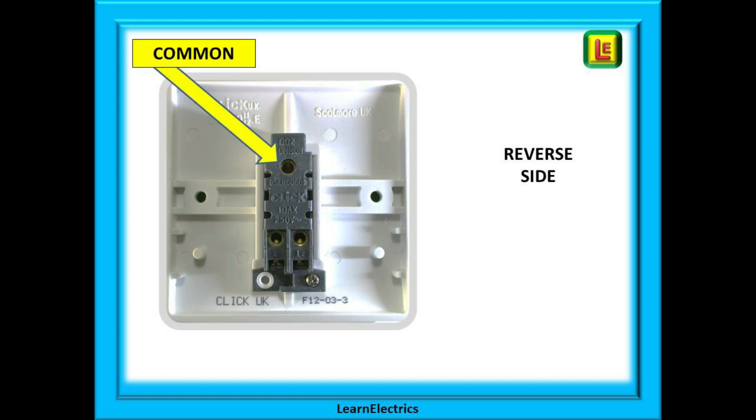On this reverse side you will see three holes with one hole that is quite obviously separate from the other two. This is the common terminal and it will make sense soon. Bottom left is terminal L1 and bottom right is terminal L2. So we have common, L1, L2.